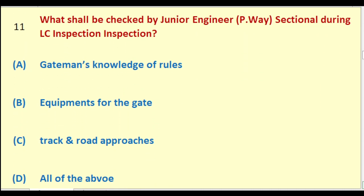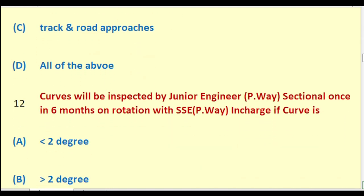What shall be checked by Junior Engineer Permanent Way Sectional during LC inspection? Options: gateman's knowledge of rules; equipments for the gate; track and road approaches; all of the above. The right answer is: all of the above.